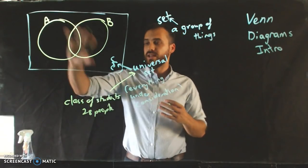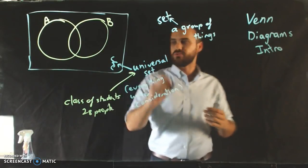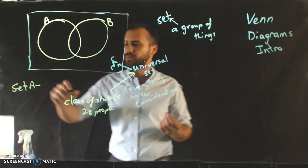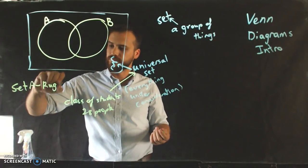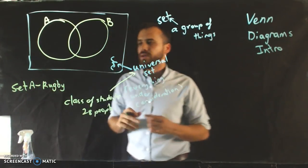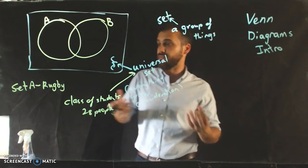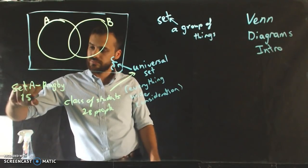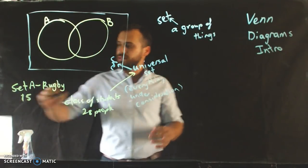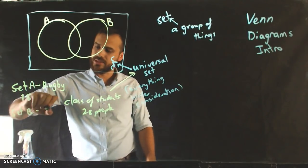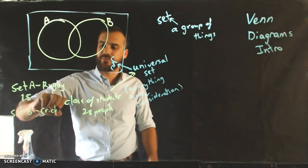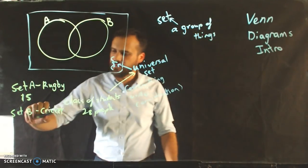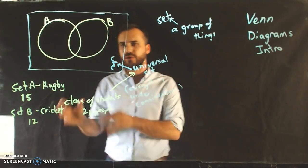Now, let's say that set A represents people who play rugby. And let's say in this particular class that 15 people play rugby. And let's say that set B represents people that play cricket. Set B is cricket. Let's say 12 people in the class play cricket.